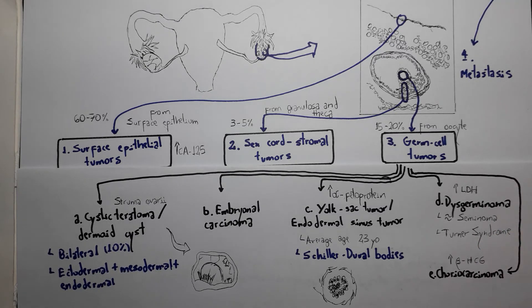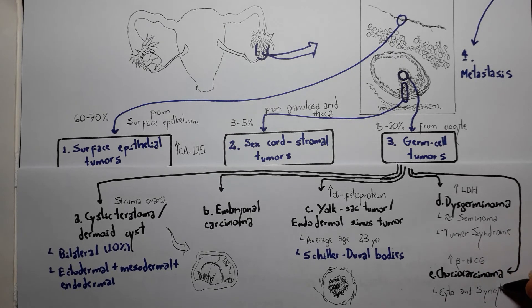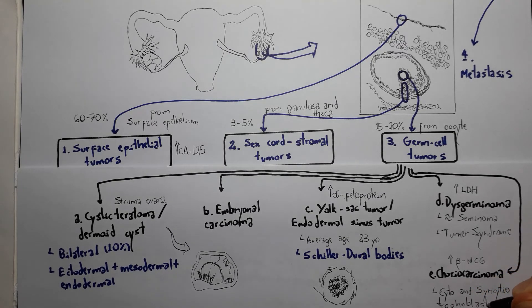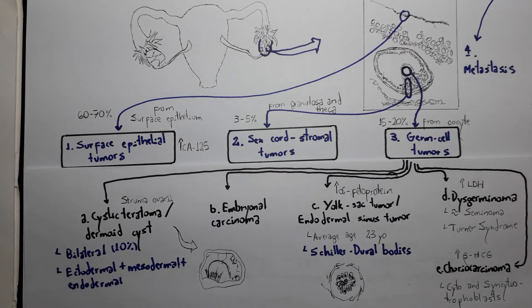Choriocarcinoma is a highly malignant tumor composed of cytotrophoblasts and syncytiotrophoblasts but with absent villi. It's a tumor that resembles the placenta and therefore has hematogenous spread and presents with elevated beta-HCG. Just as you'd expect from a normal placenta, it secretes beta-HCG and is really good at finding blood vessels to invade.